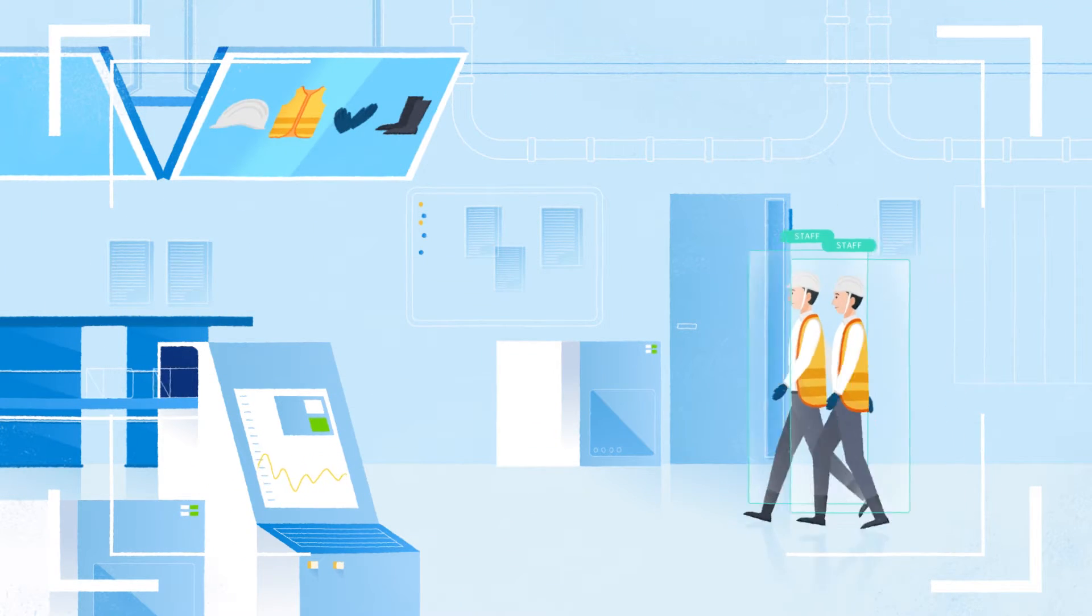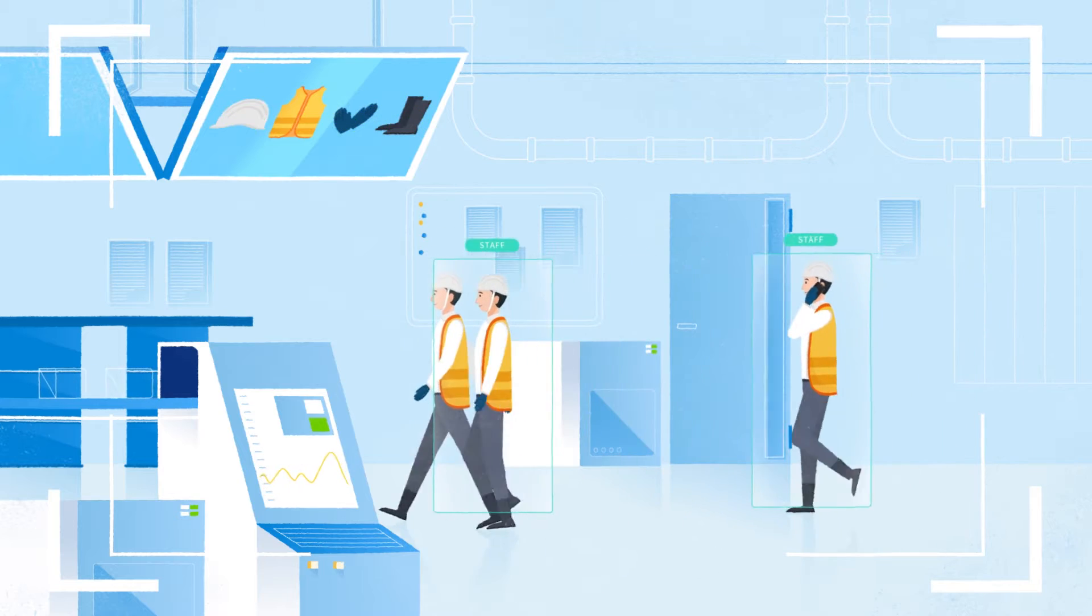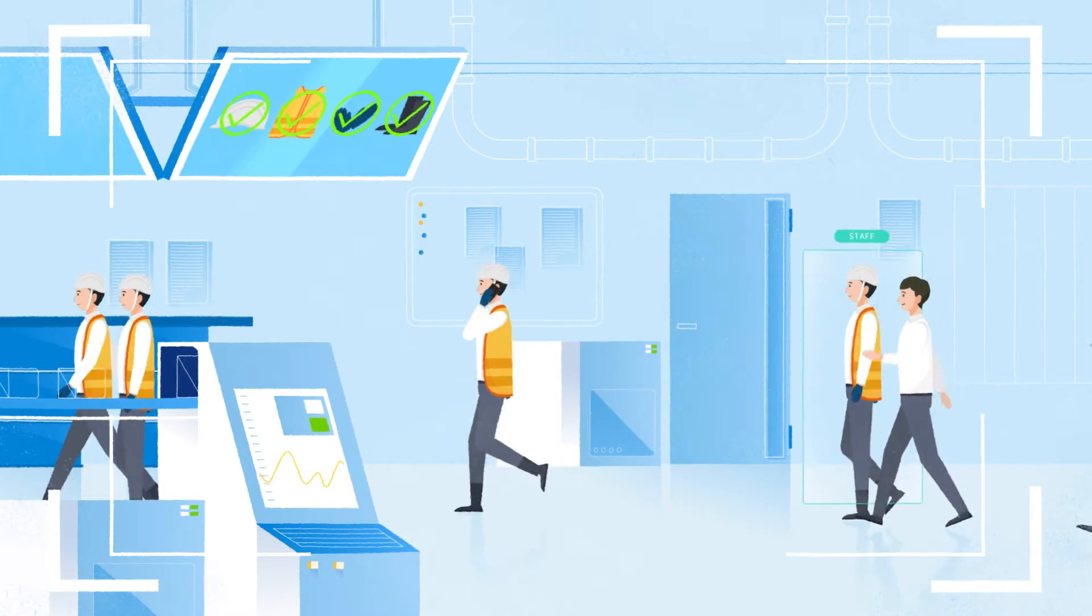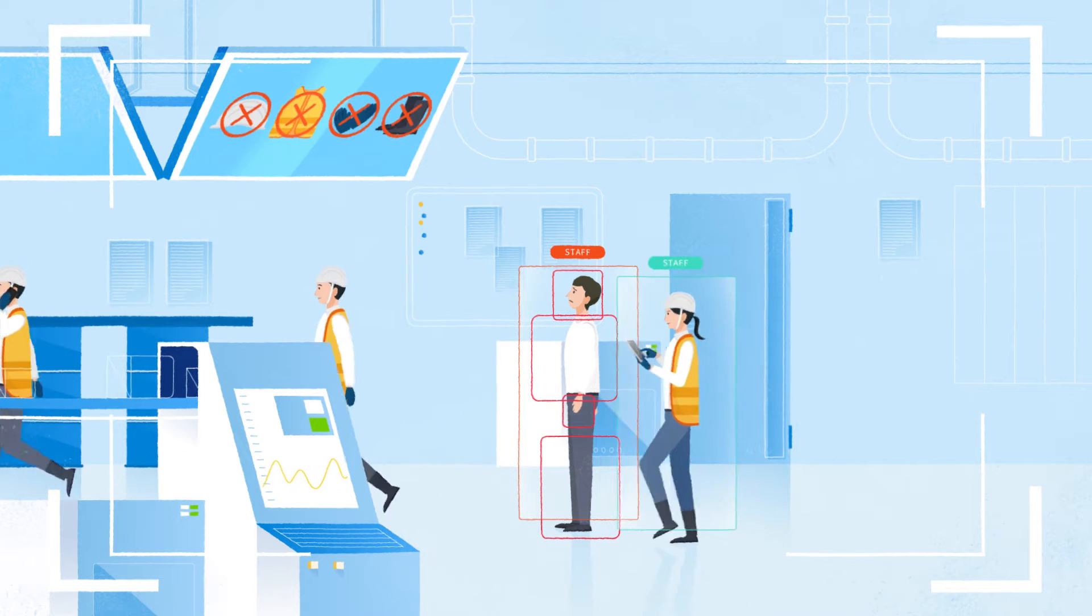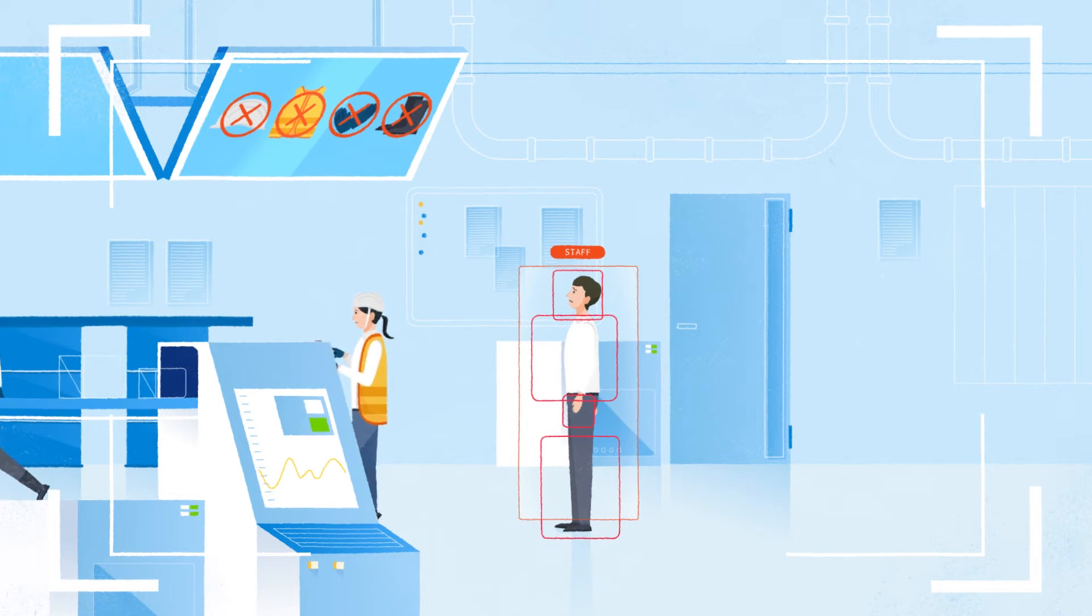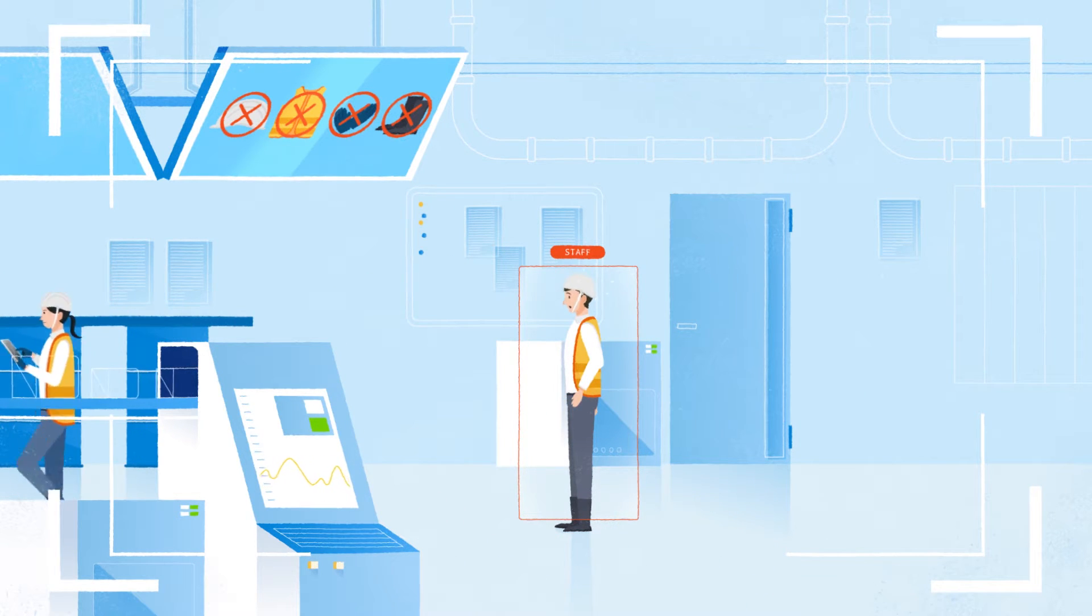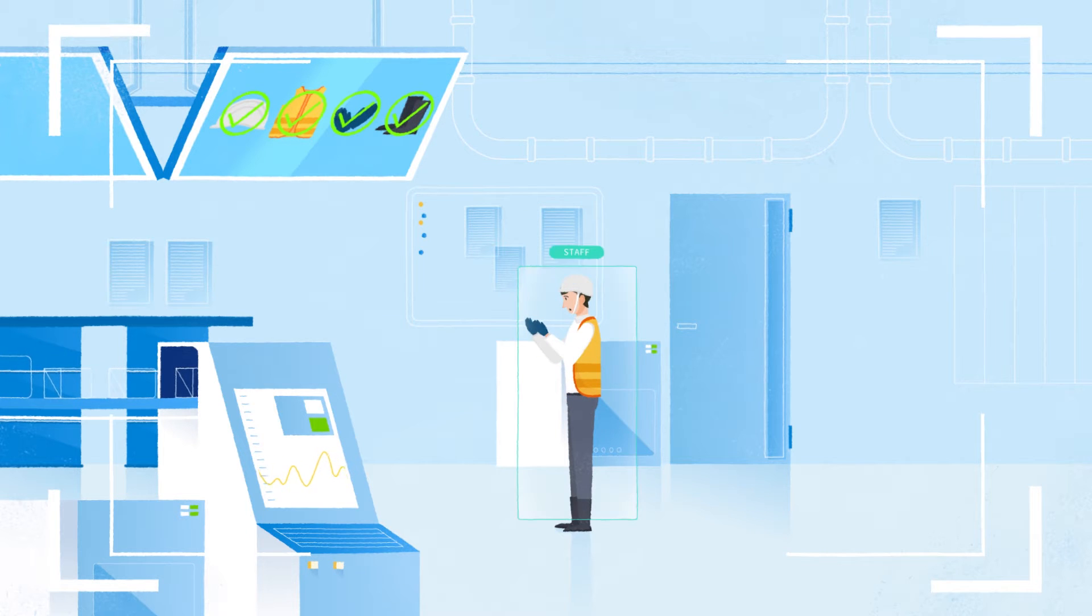Does your factory operator comply with standard workplace safety procedures? AI machine vision can identify when employees are not wearing the appropriate safety equipment to prevent workplace accidents and keep employees safe.